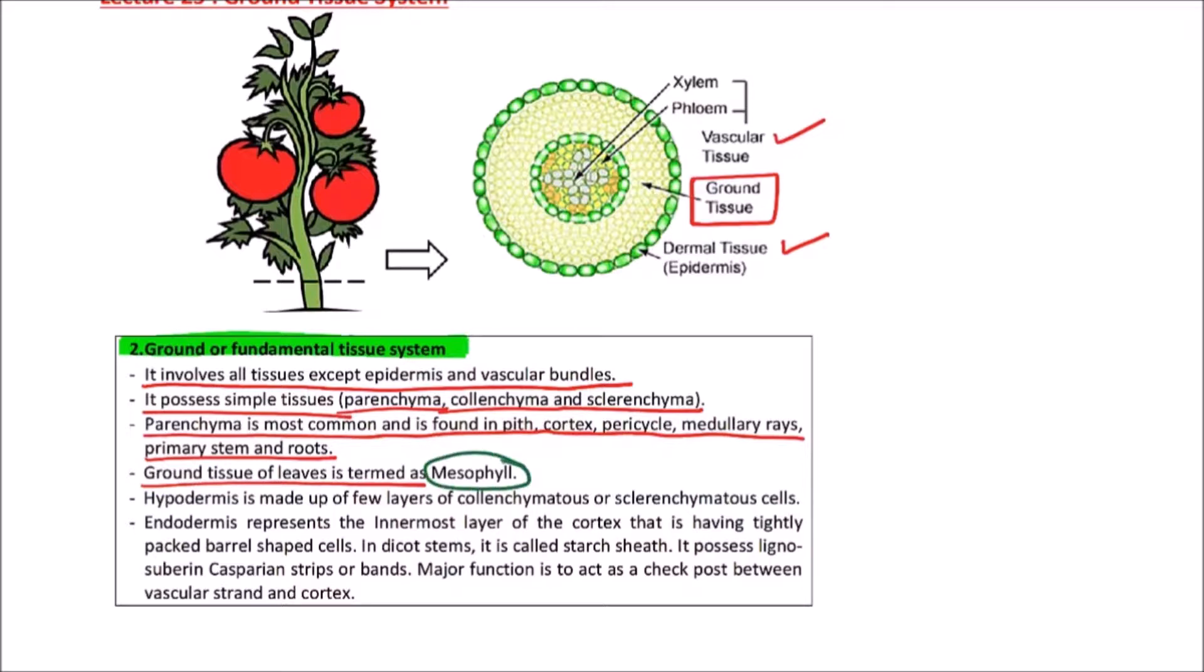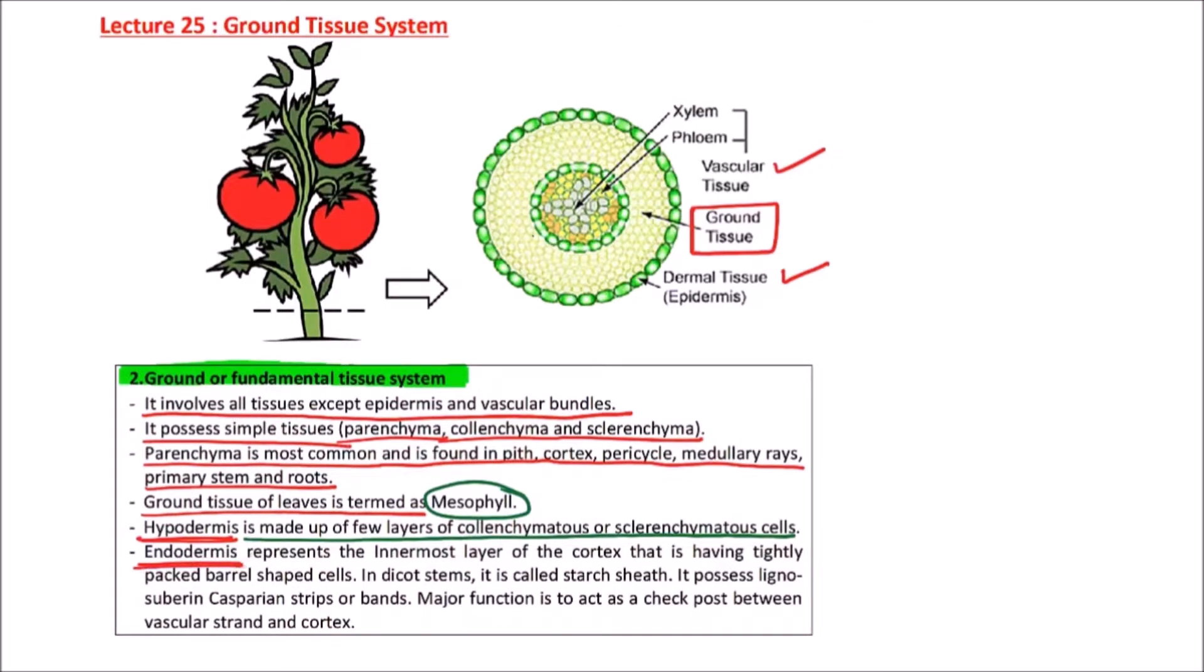Then hypodermis, it is made up of few layers of collenchyma or sclerenchyma cells. Next is endodermis. Endodermis represents the innermost layer of the cortex, and it is having tightly packed barrel-shaped cells.